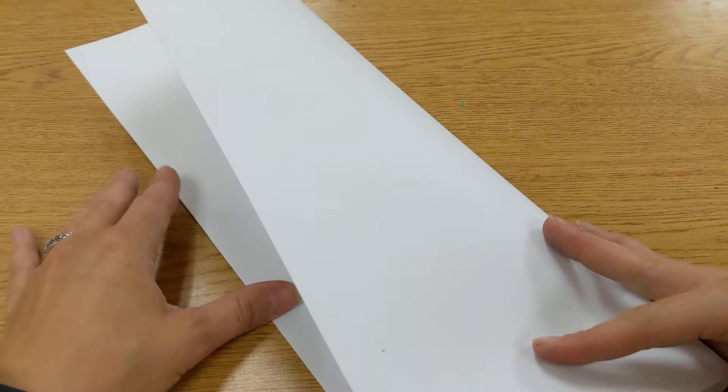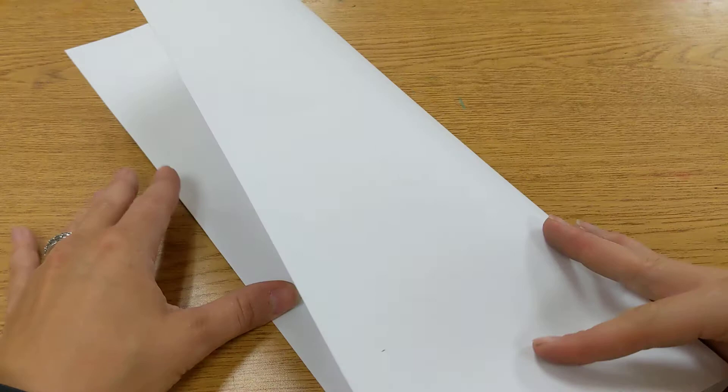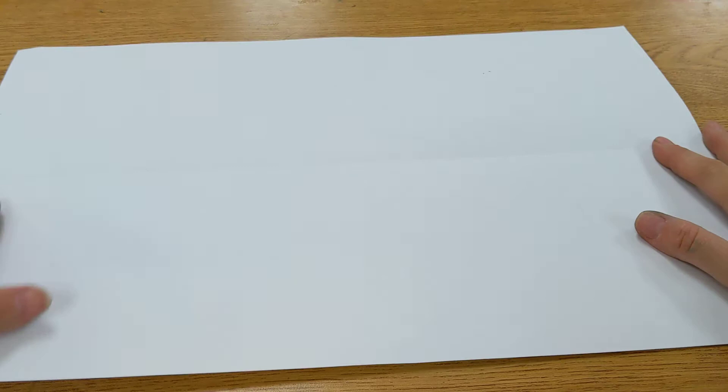We're going to start with our large piece of white paper, and we are going to fold it in half the long ways to give ourselves a guideline. And then we are going to open it back up and fold the bottom half up one more time. We're folding the bottom half up to match that middle fold. We're going to use these two folds as a guideline for our project.